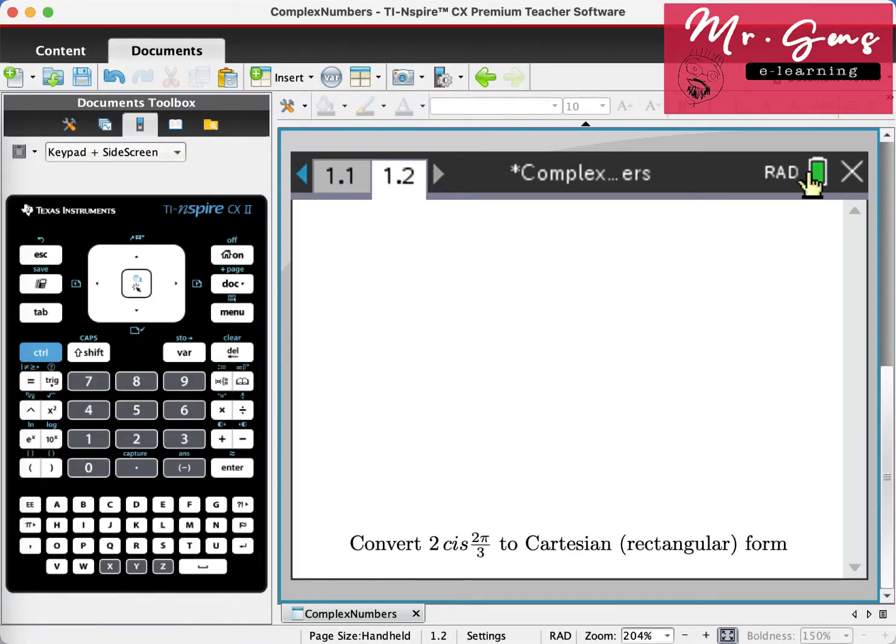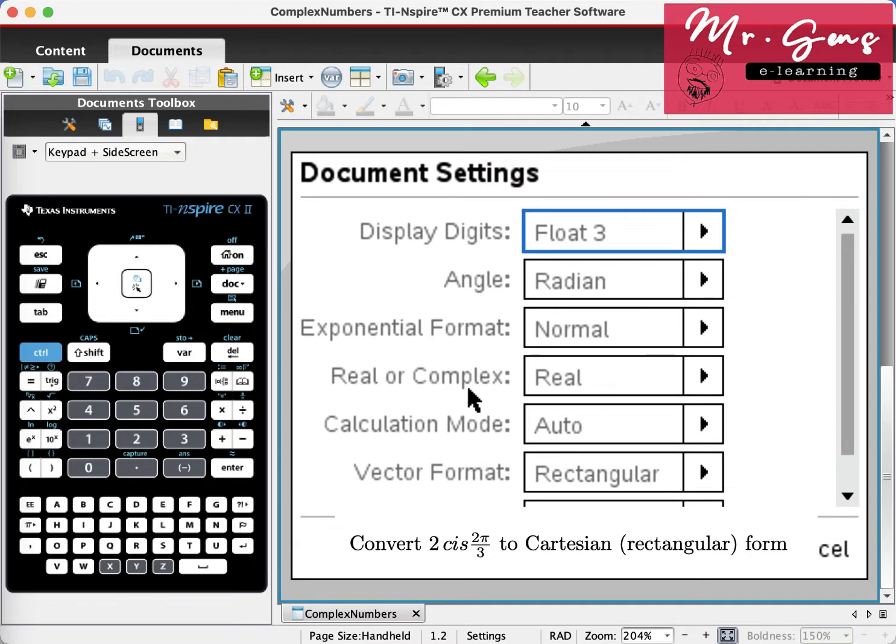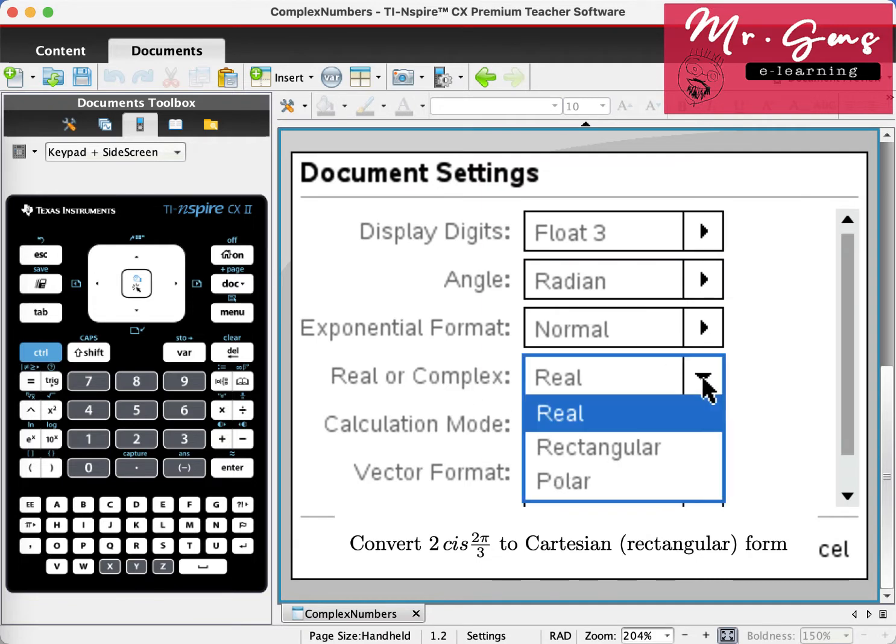Let's start checking our settings. Click on the battery sign, document settings, and the fourth row gives us some options: Real numbers, rectangular form, or polar form. I will keep it as real for now.